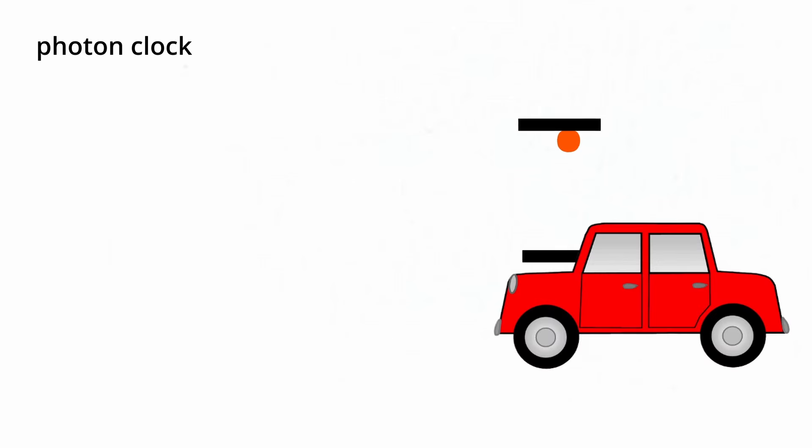Let's say that this clock is on board a car, and another man is viewing the clock from afar. When the car is stationary, both people will perceive the clock moving at the same rate.